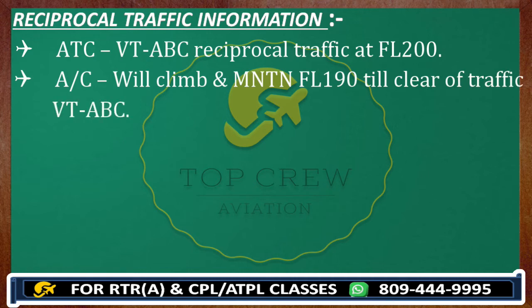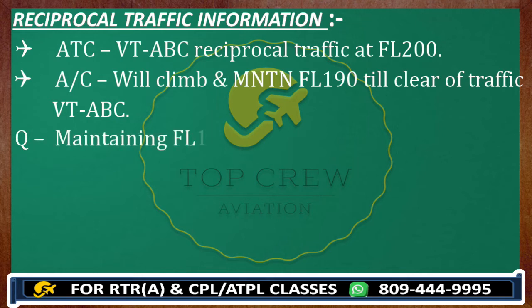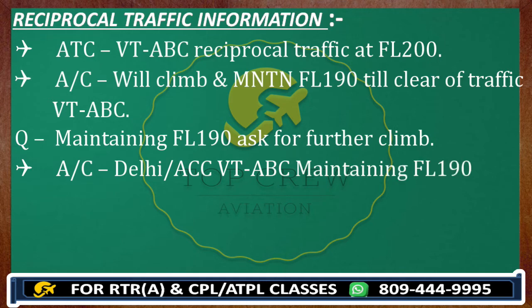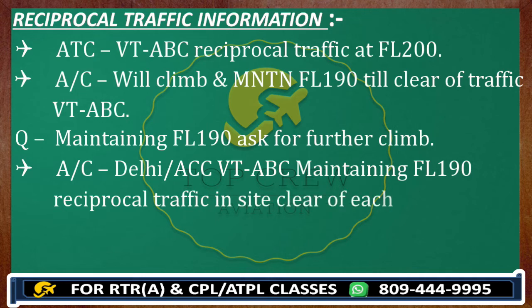Now whenever that traffic has been cleared — and that can be determined by visual, by DME, or by time — let's say we are maintaining flight level 190. Now how we are going to ask for further climb: Jelly control, Victor Tango Alpha Bravo Charlie, maintaining flight level 190, clear of each other, request further climb to flight level 310.